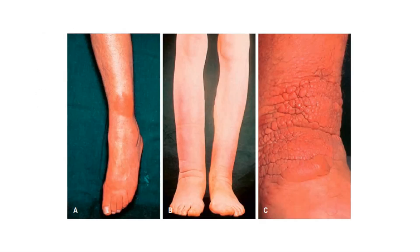These are some pictures showing thyroid dermopathy. Picture A shows a localized plaque on the outer aspect of the skin. Picture B shows sheet-like involvement of the lower leg, with coarse skin, thickened hair, and non-pitting edema. Whereas picture C shows a horny form over the shin and dorsum of the foot.